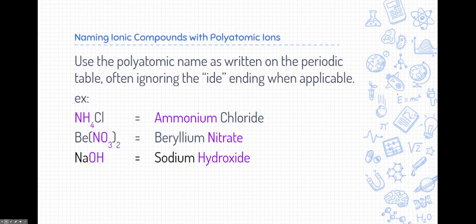All right, so what about naming ionic compounds with polyatomic ions? How does that change? Well, when we see polyatomic ions in a formula or a name, we just use whatever the list is on the periodic table. We trust that list to give us the information that we need. Sometimes we ignore the ending of ide, which is, again, what would be given to us on that list. So let's take a few examples.